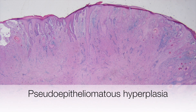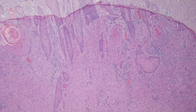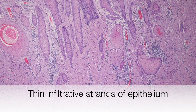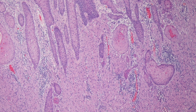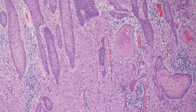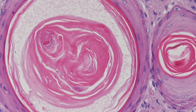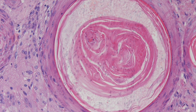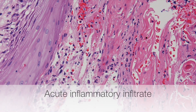This is a low power view of pseudoepitheliomatous hyperplasia showing some symmetry to the lesion. On higher power you can see the long thin strands of epidermis with a rather jagged appearance to the basal aspect. Here are a couple of horn cysts containing orthokeratin — that is keratin without the pyknotic nuclei. And here we can see an acute inflammatory infiltrate in the epidermis.